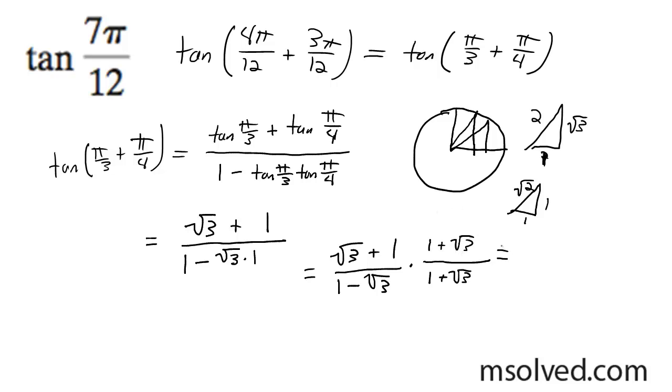And on the bottom, you're going to get 1 - 3. And on the top, you're going to get root 3 + 3 + 1 + root 3.